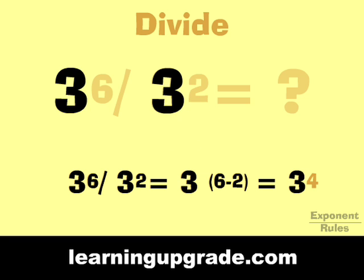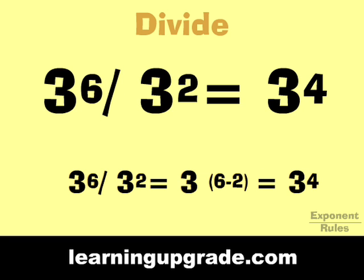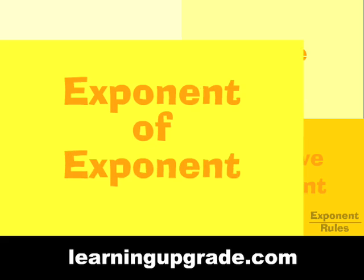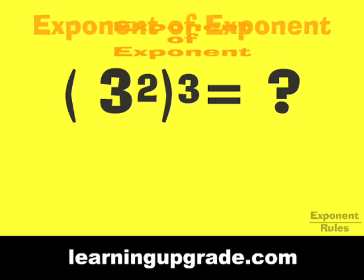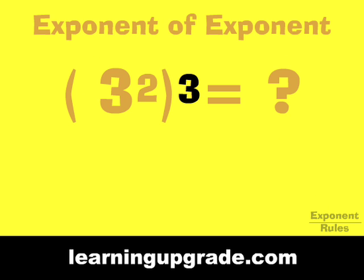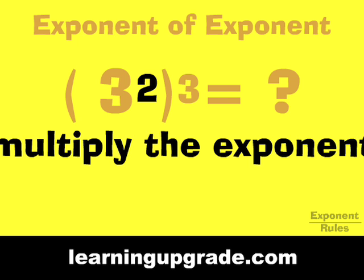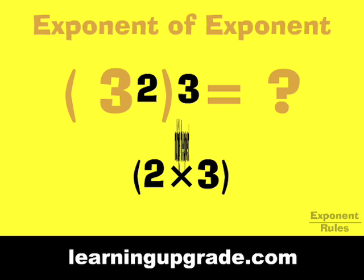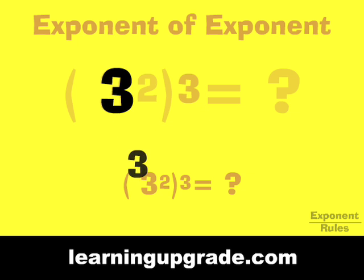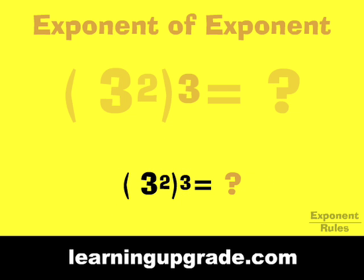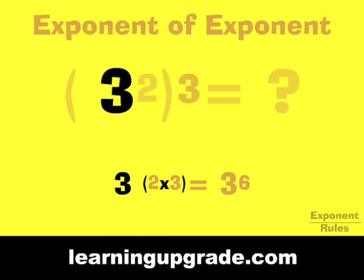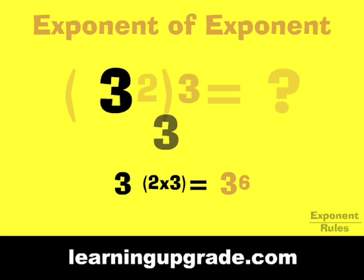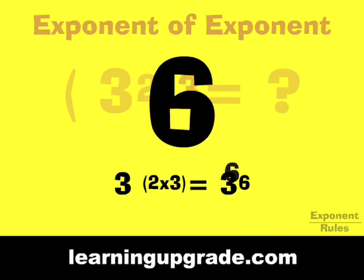That equals 3 to the fourth power. When you take an exponent of an exponent, you multiply the exponents. Example: 3 squared cubed equals 3 to the 2 times 3 power, which equals 3 to the sixth power.